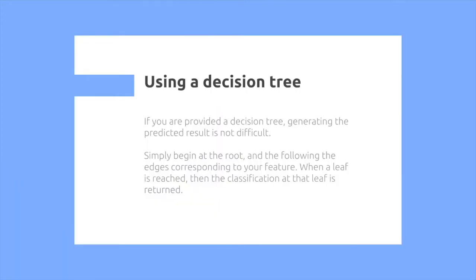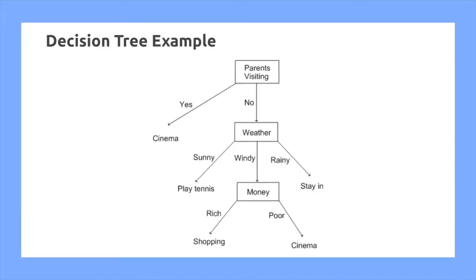So how do they work? If you're provided a decision tree, generating the predicted result is not difficult. Simply begin at the root and follow the edges corresponding to your feature value. When a leaf is reached, then the classification of that leaf is returned. So for example, going back to my case over here.